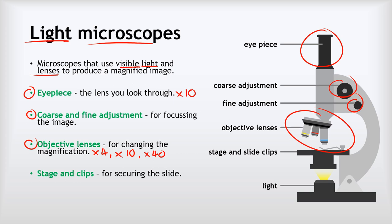Moving further down we've got the stage and the clips. That's what you can see here. That is for safely securing the microscope slide and holding it in place so that we can study it without it moving around. And then the last bit we've got at the bottom is the light, and you can see that yellow light coming up there. That's to illuminate the slide to make it nice and bright so we can really clearly see all of that detail.